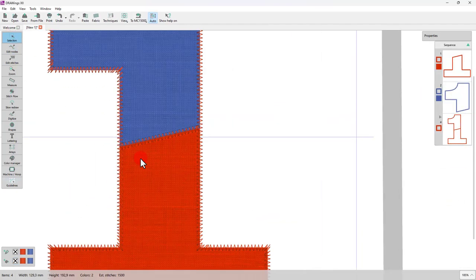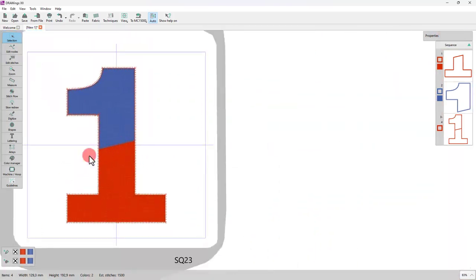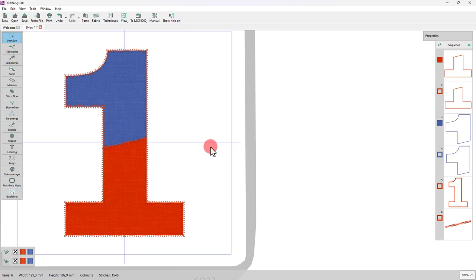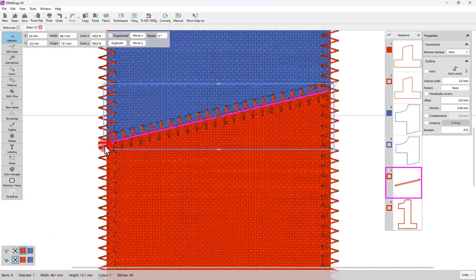Notice that in order to cover everything as we like, we want this line to be embroidered before the auto border. So, we will click on Auto button to turn off the Auto Mode and adjust the sequence manually. Select the line and move it after all the applique parts and before the final auto border. Our design is done.